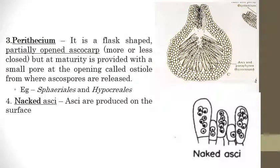Next is Perithecium. It is a flask-shaped or partially opened ascocarp. There is a small opening or partial opening called the ostiole. Spores are released out from the ostiole. Perithecium is a flask-shaped fruiting body with a partially opened ascocarp.